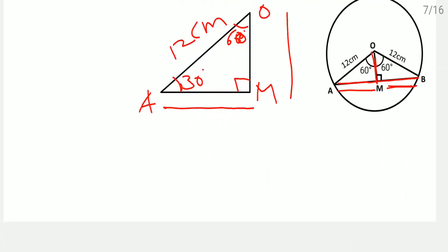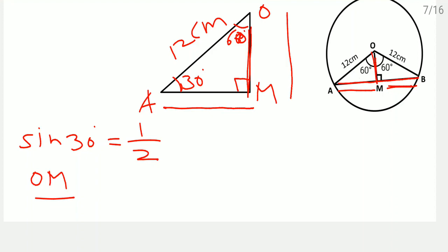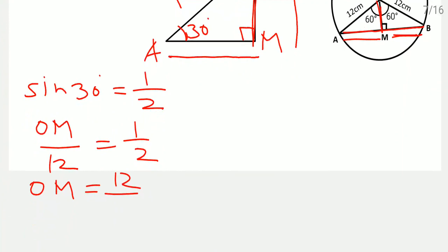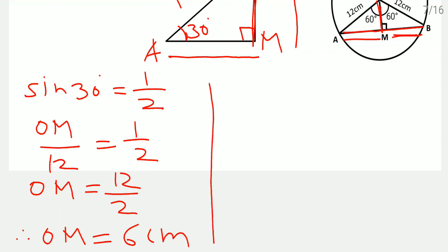First, sin 30 degree equals 1 by 2. Sin means opposite side over hypotenuse, so opposite of 30 degree is OM. Therefore OM divided by OA which is 12 centimeter equals 1 by 2. So OM equals 12 by 2, therefore OM equals 6 centimeter.